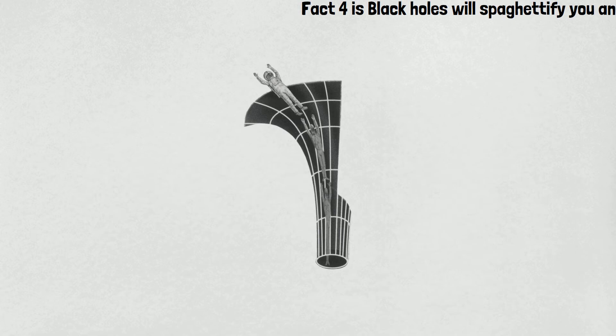They will become increasingly more attracted as they inch closer to the center of the black hole. The closer they get, the faster they move. But the top half of your body is farther away and so is not moving toward the center as fast. The result will be spaghettification.